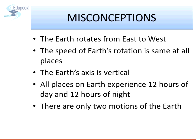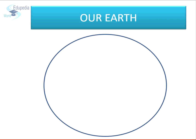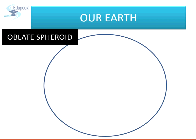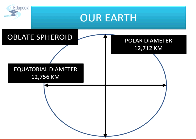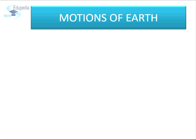Our earth is a large spherical ball, just like other planets and stars we see in the sky. It has a radius of more than 6,000 km and a circumference of more than 40,000 km. Our earth is not a perfect sphere — it is slightly flattened at the poles and bulging at the equator. Our earth undergoes multiple motions simultaneously.